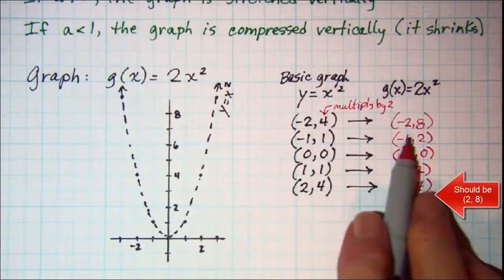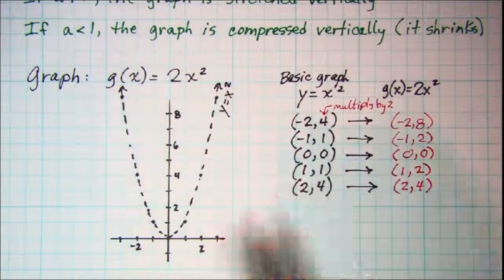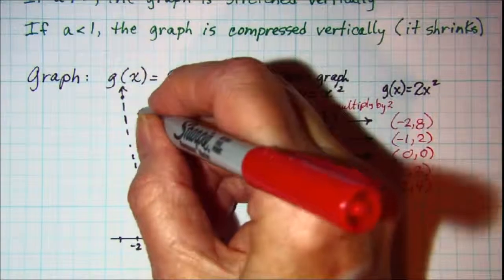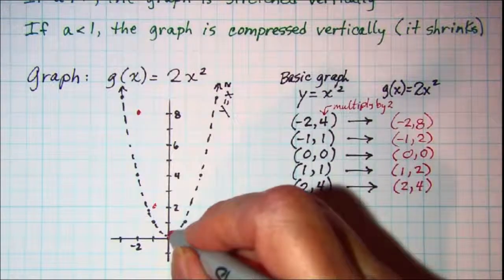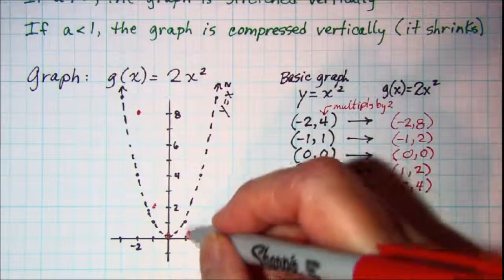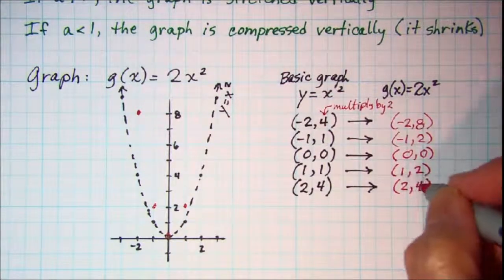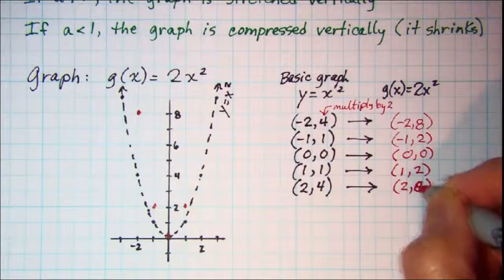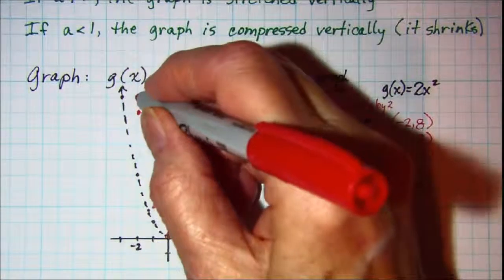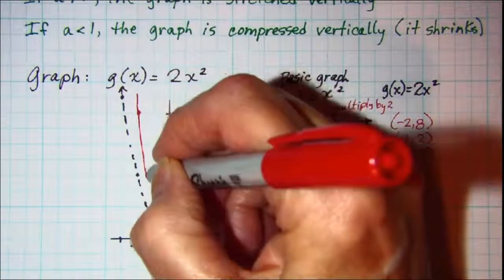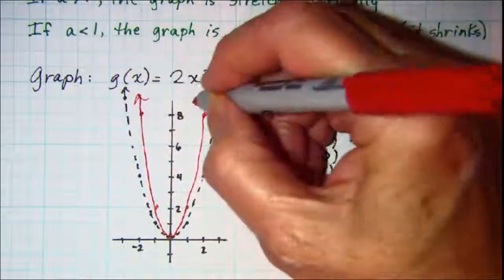So let's plot these points and see what our g of x equals 2x squared graph looks like. Negative 2, 8; negative 1, 2; 0, 0; 1, 2; and 2, 8. So our g of x graph is shown in red.